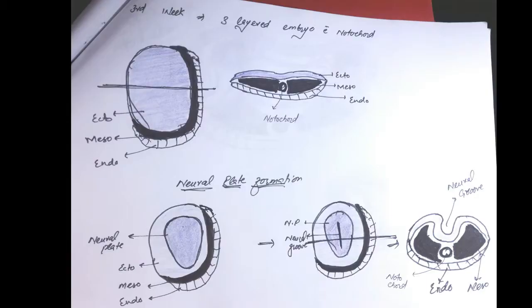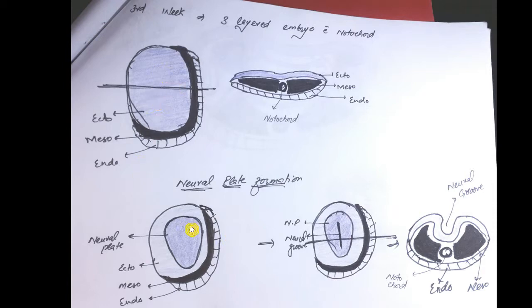A brief review for those who have just joined us: we started from a third-week embryo. There are three layers in the third-week embryo — at the third week we have ectoderm, mesoderm, and endoderm. Here is a cross section of that.